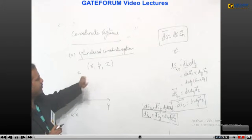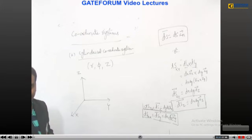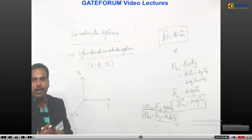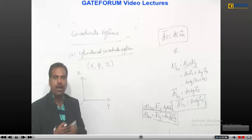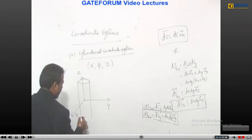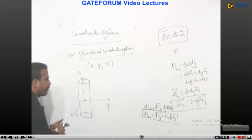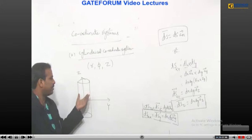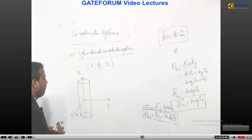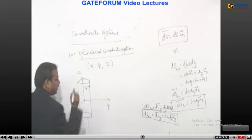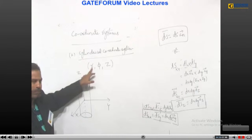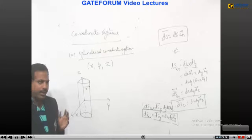In the cylindrical coordinate system, r is called the radius of the cylinder. As the name indicates, we consider a cylindrical surface first to understand the coordinates r, φ, z. The cylindrical surface has its axis along the z-axis, with the origin as its center. The radius of this cylindrical surface is r — that is the first coordinate.